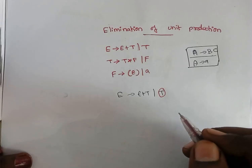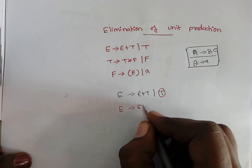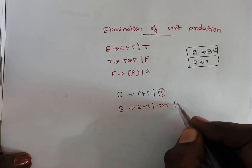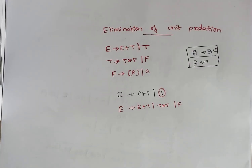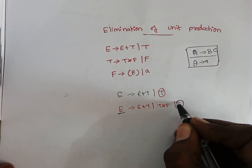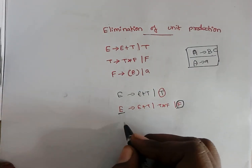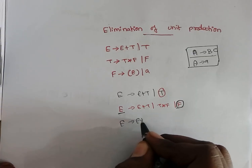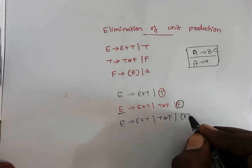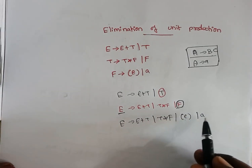So when you have a unit production, substitute the production for t over here. We can write this as e tends to e plus t. And the production for t is t star f, followed by f. So now e tends to f is again a unit production. We want to eliminate this unit production too — again it is a mere substitution. Substitute the production for f over here, that is e and a. Now there is no unit production here.